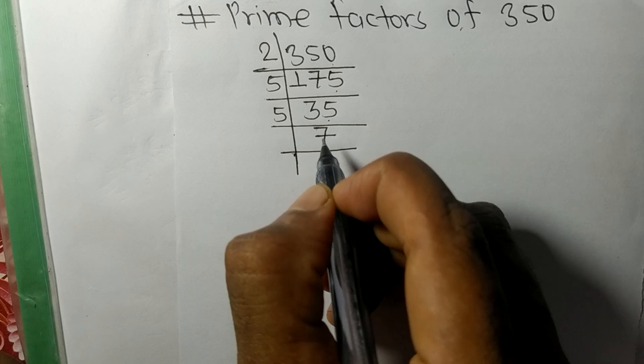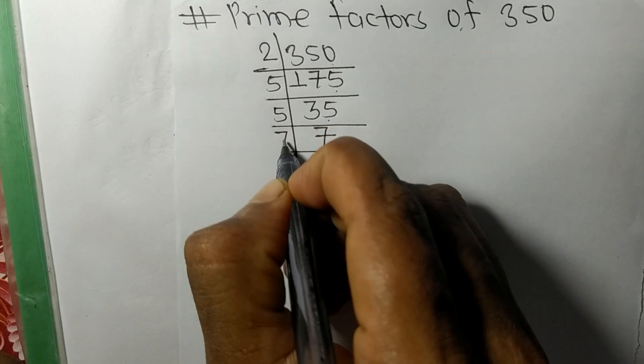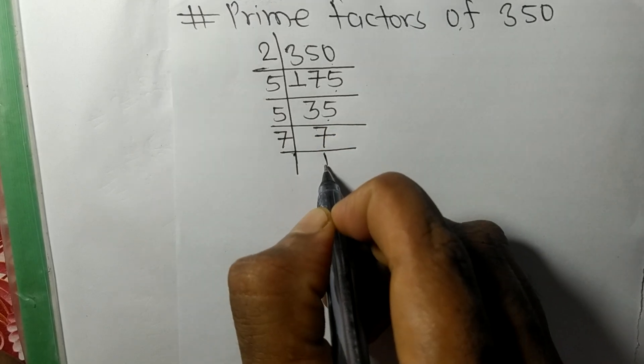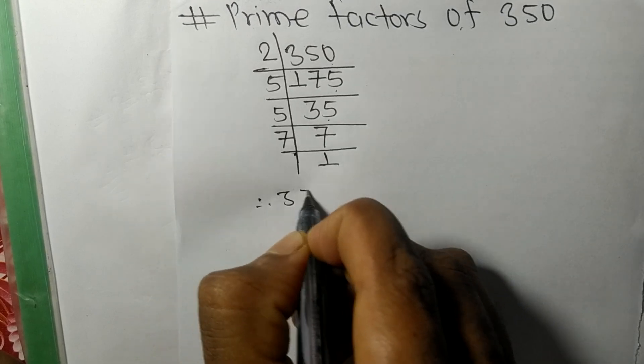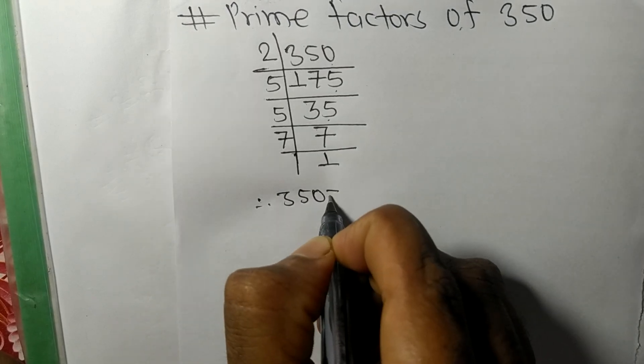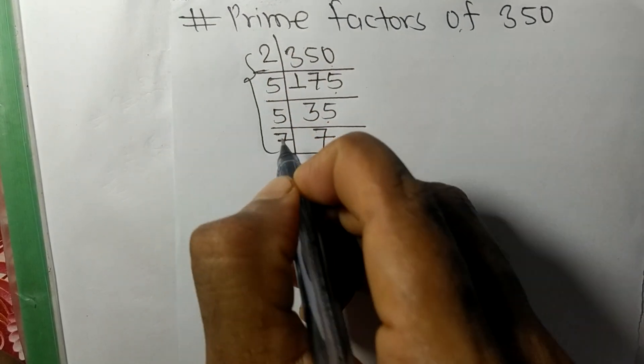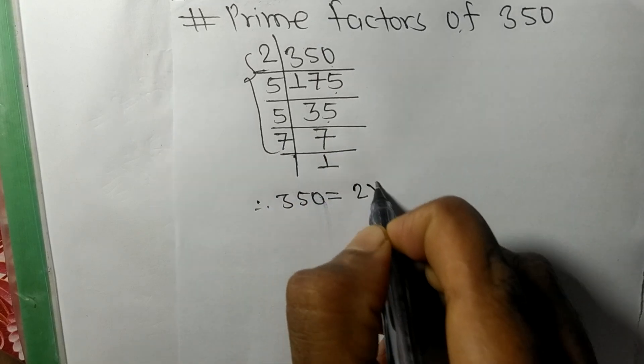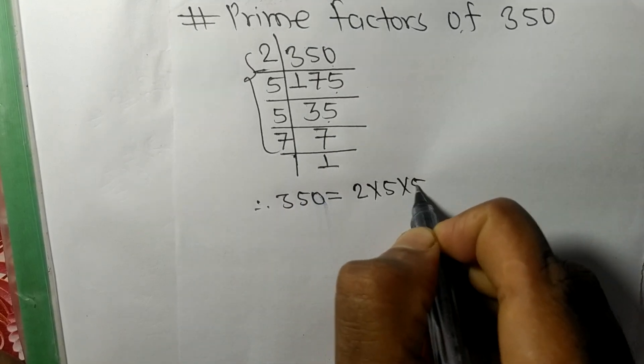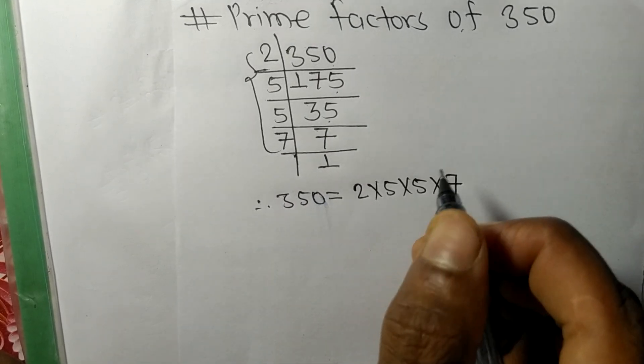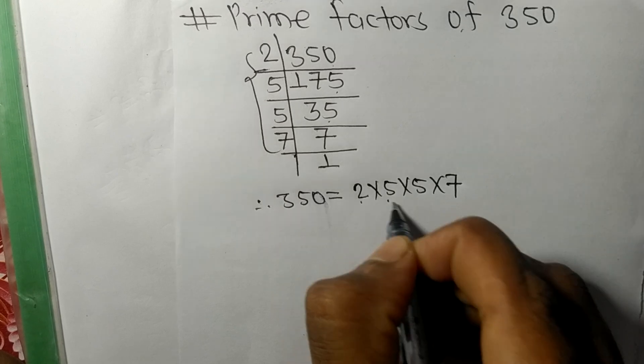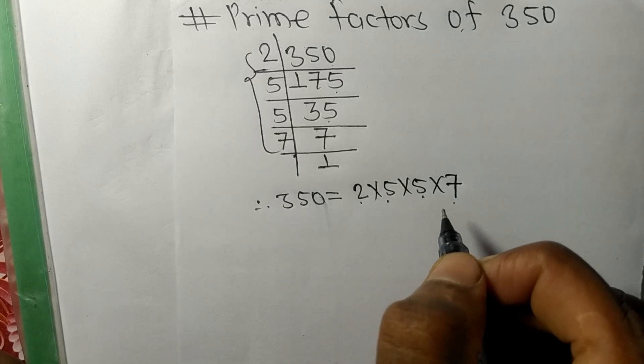So it is divided by 7 itself and we get here 1. Therefore 350 is equal to, from this side, it is 2 times 5 times 5 times 7. So 2, 5, 5, and 7 are the prime factors of 350.